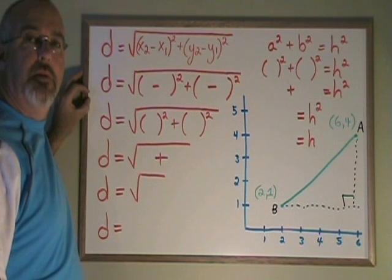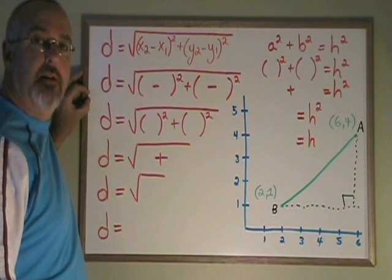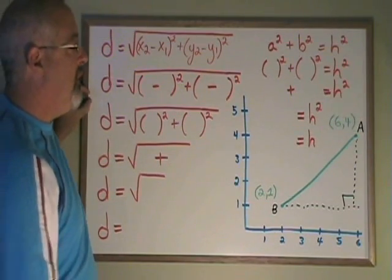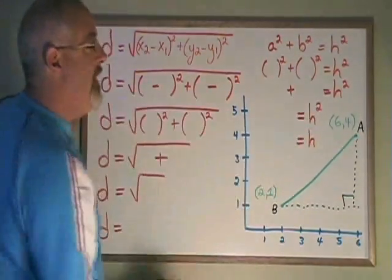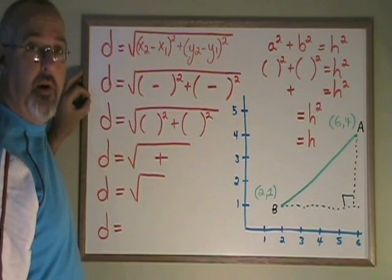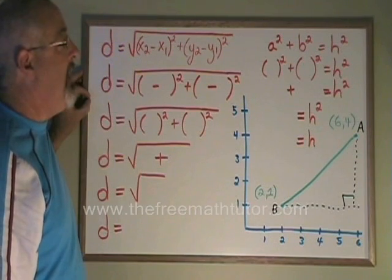The distance formula can be used to calculate a straight line distance between any two points. In this example, I want to know the distance between point B and point A. I know the coordinates of point B on a coordinate plane are given, and the coordinates of point A are given.